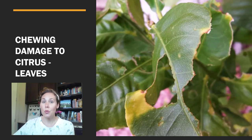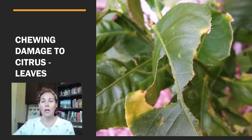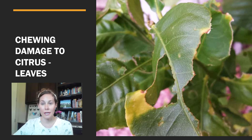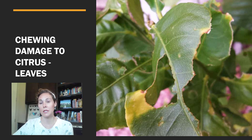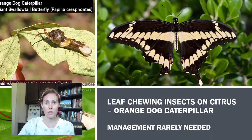If an insect is chewing on the leaves of your plant, the typical damage you'd see includes holes and chunks taken out, generally around the margins. The less leaf tissue there is, the less area there is for photosynthesis. The plant puts a lot of energy into replacing those leaves, and when it does, those are young, tender, juicy leaves that insects love to feed on — they'll move right over and feed on that young growth.